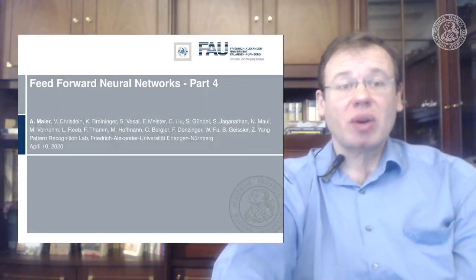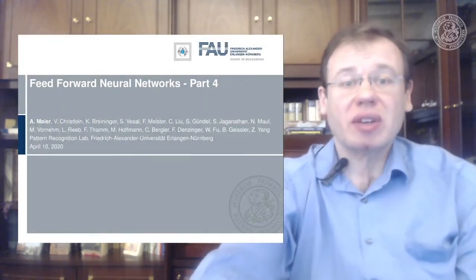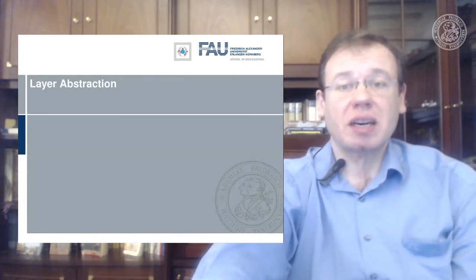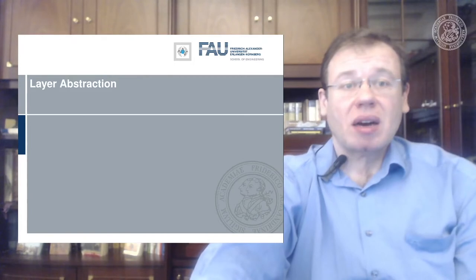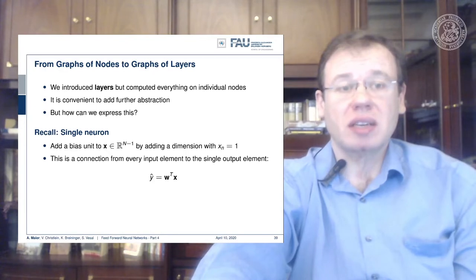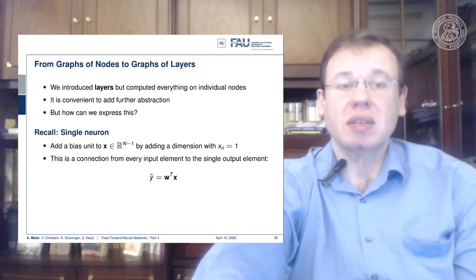Welcome everybody to our next video on deep learning. Today we want to talk about feedforward networks, part four, and the main focus today will be layer abstraction. We talked about neurons and individual nodes, but this grows really complex for larger networks, so we want to introduce this layer concept also in our computation of the gradients.